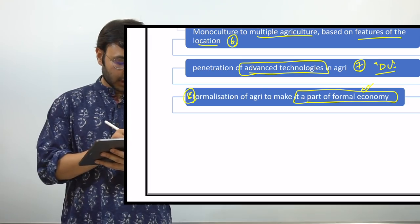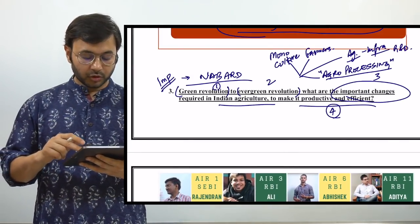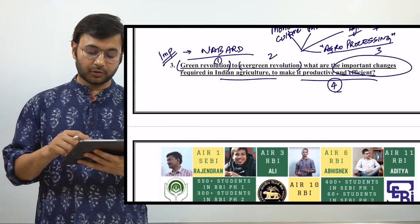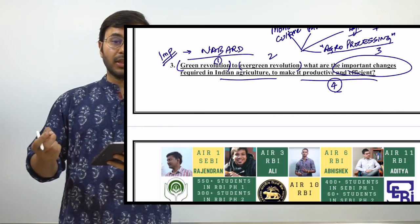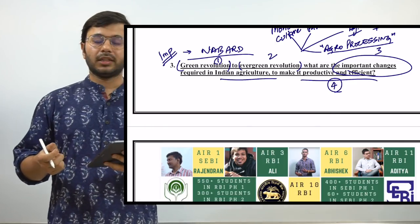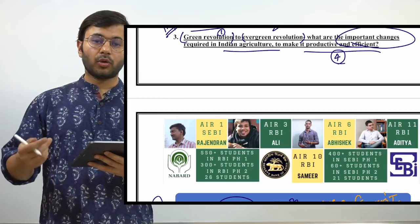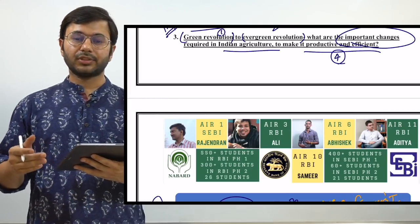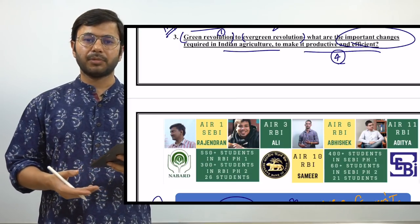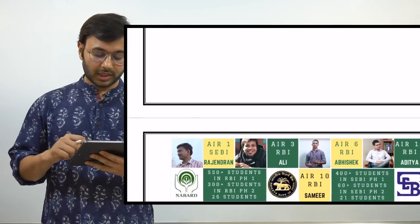These eight points are enough to secure good marks if this topic or something similar comes in the examination. Last year we discussed about 30–35 topics and one topic directly came in the examination, helping a lot of students. This year I plan to cover 20–30 topics specific to agriculture and other areas so you are well prepared for both NABARD and RBI. If you liked this lesson, please subscribe to the channel and press the bell icon to get daily notifications. All the very best, take care.